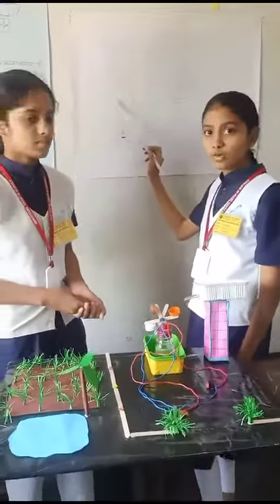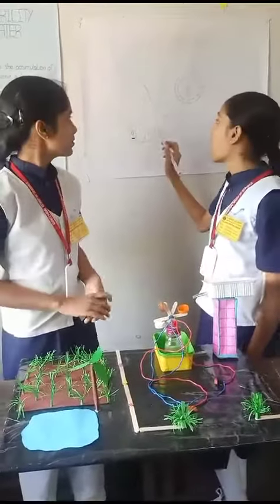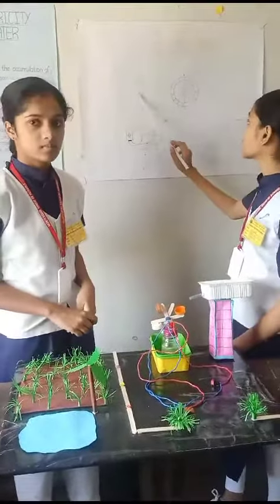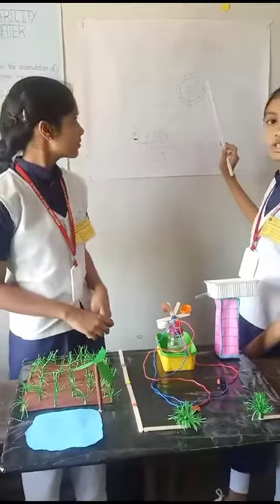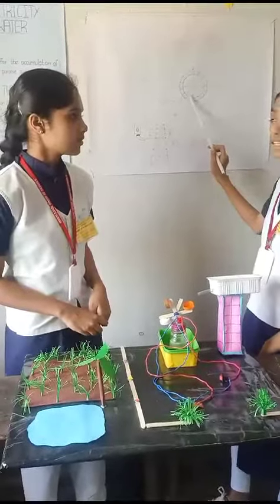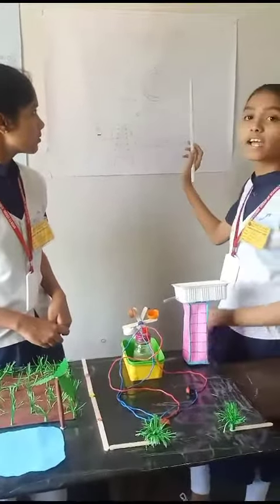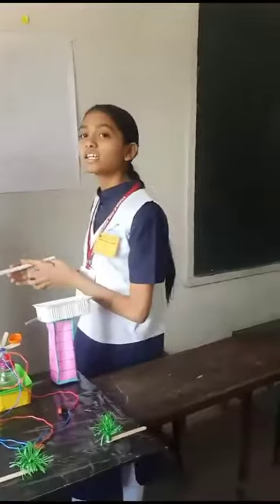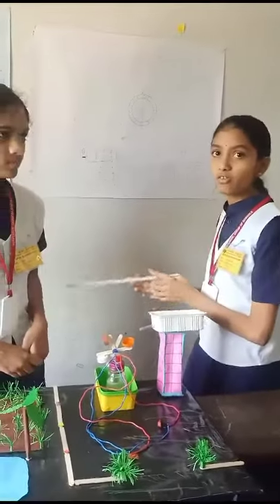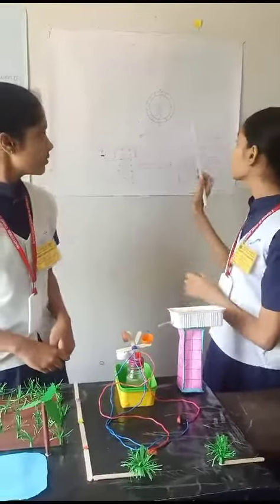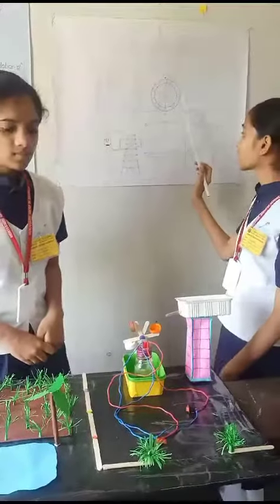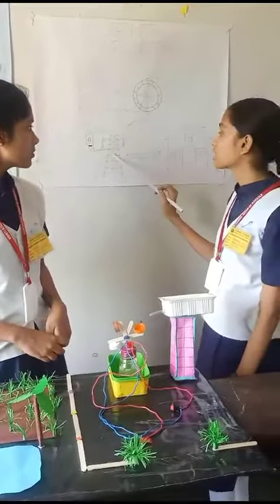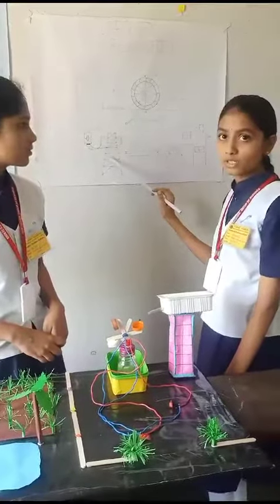First, we collect the rainwater and the solar water. This directs rainwater to a turbine. The turbine rotates and converts the solar energy. That is the movement of water using electric energy. We transport this electric energy to the transporters.